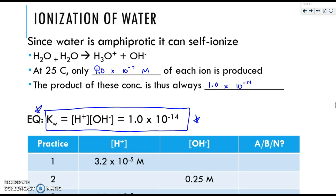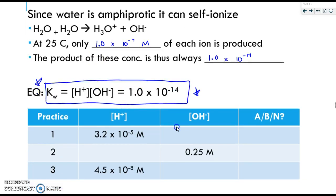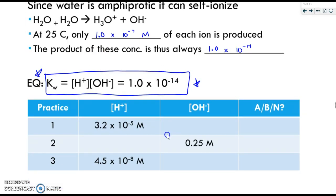But Kw is the H plus concentration times the OH minus concentration equals 1 times 10 to the negative 14th. Mathematically, it's not too bad. We're always going to take the constant divided by the given concentration. So no matter what, mathematically, you will always do this. Let's take the 1.0 times 10 to the negative 14th divided by the provided number. And that will tell you the other concentration.